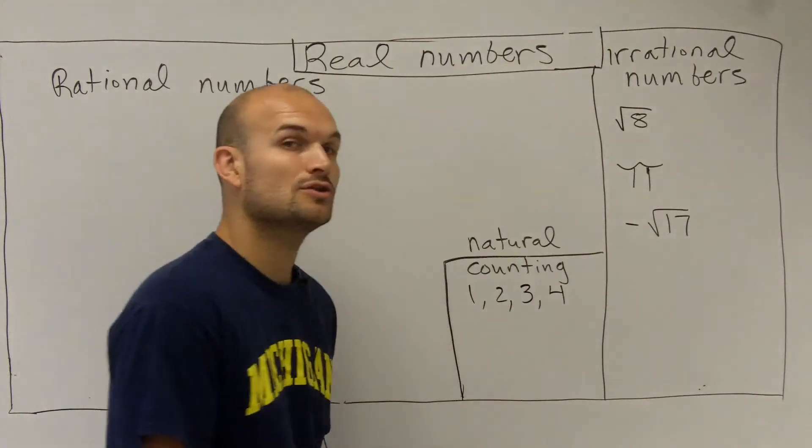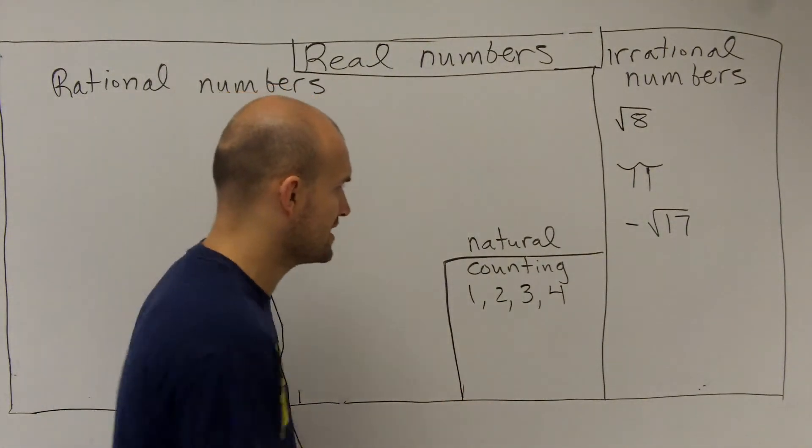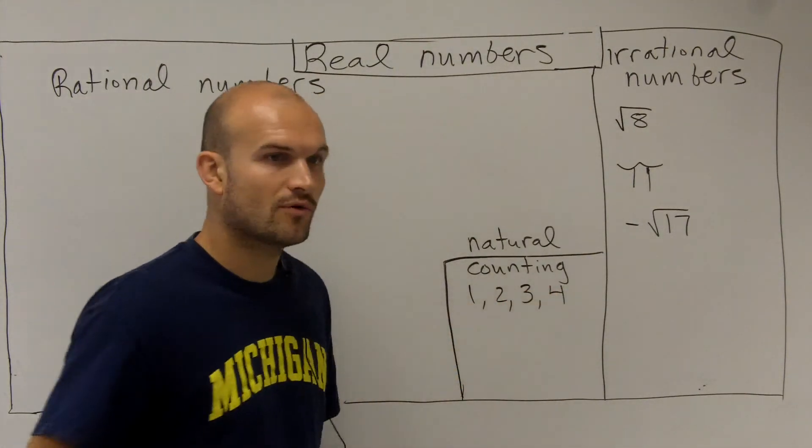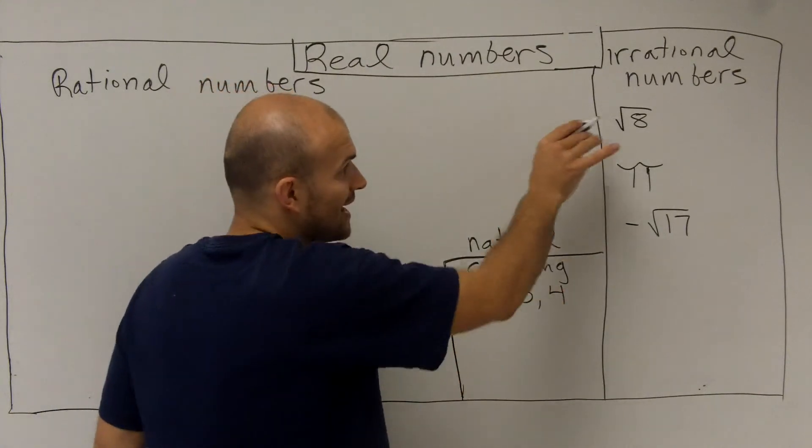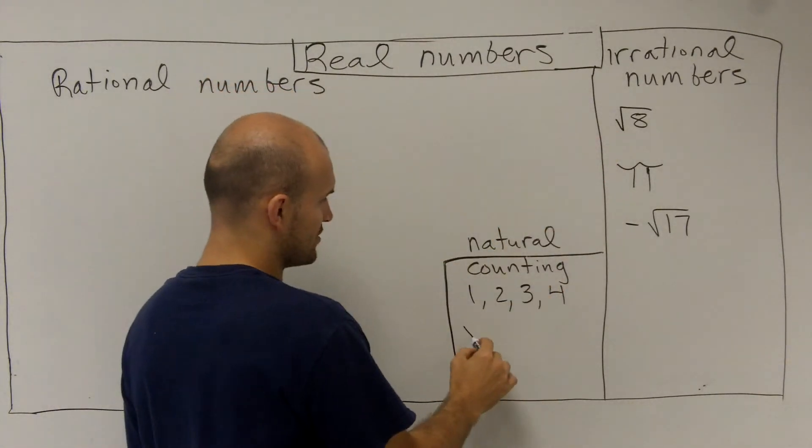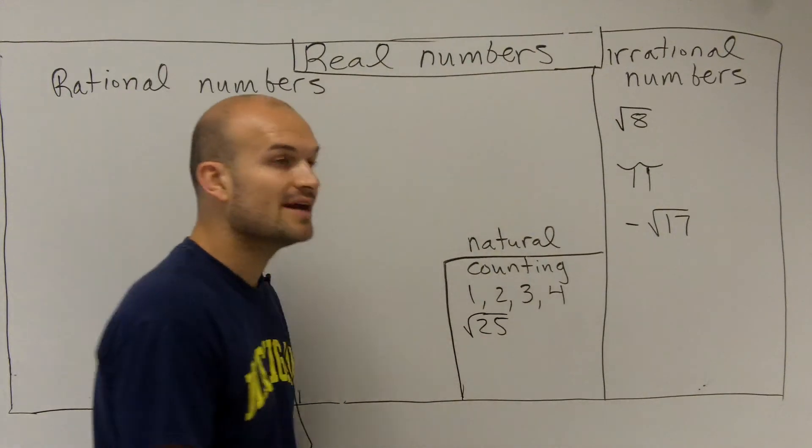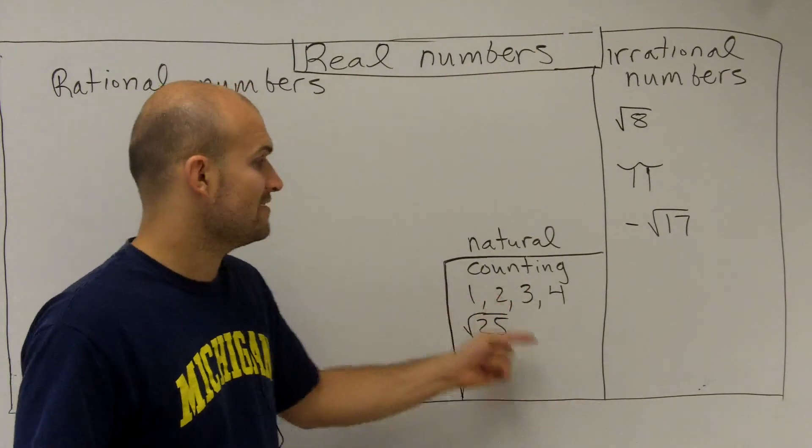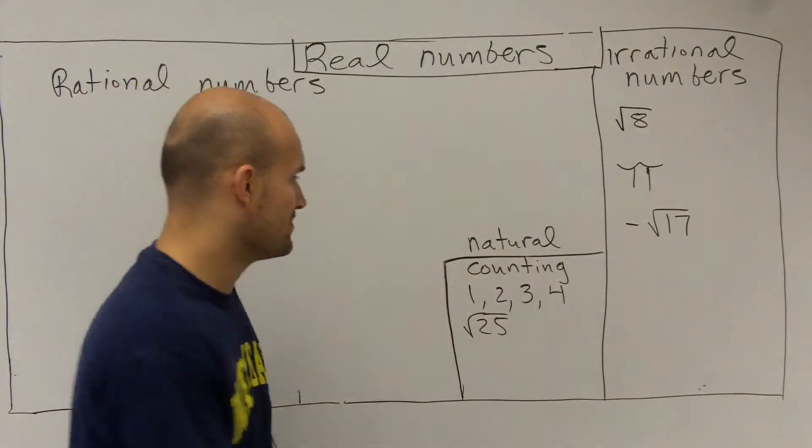They do not include zero. That's very important for you to understand. It's just one, two, three, four, and there are other ways we can represent it. I know you might say, the square root, that's irrational, right? But if I write the square root of 25, we know the square root of 25 is five, and five is a counting number.